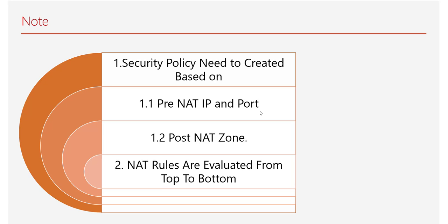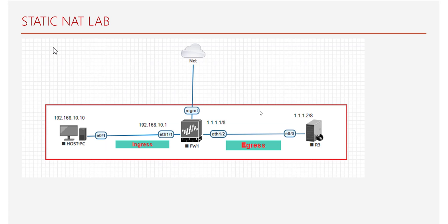For example, if you have a dynamic NAT policy at the top and a static NAT policy at the bottom, the static NAT policy would not get hit if the dynamic NAT policy already covers it. These are the two key points to consider when writing security policy rules and NAT rules. For our lab, we have a simple one-firewall setup with an ingress zone with a host PC on subnet 192.168.10.x and an egress zone on the 1.1.1.x range. We will do the configuration in the next session and see how static NAT works.